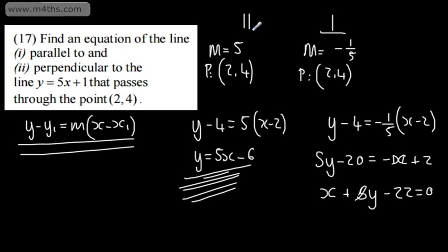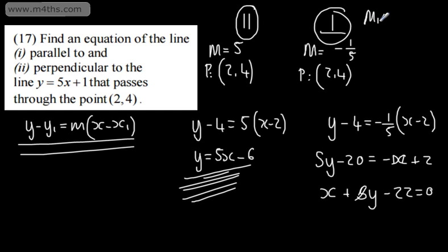If we have a parallel line, the gradient will be the same. For a perpendicular line, it will be the negative reciprocal. If asked to show this, write m1 multiplied by m2 equals negative 1 if perpendicular — some exams give you a mark for writing that.